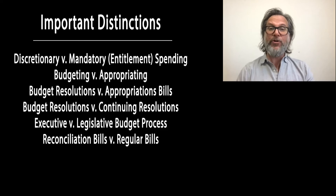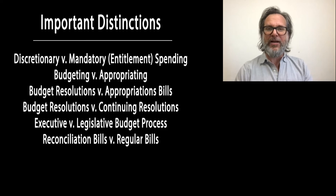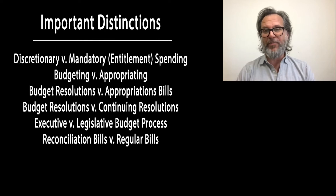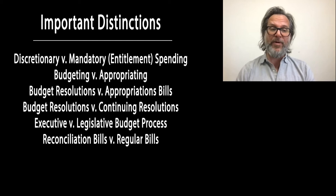A budget resolution doesn't need presidential approval and therefore cannot be vetoed. A continuing resolution is a law and does need presidential approval, so it can be vetoed. The abnormal process — relying on continuing resolutions — has become more common in the last decade than it has ever been, though it's been used many times in the modern era. I'll lay out the normal process in a diagram once I get through these initial distinctions.